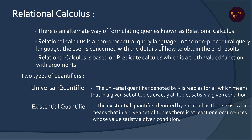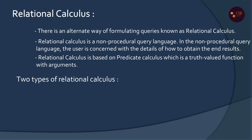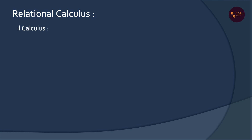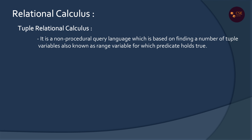There are two types of relational calculus: Tuple Relational Calculus and Domain Relational Calculus. In Tuple Relational Calculus, there are tuples available, and we find which tuples satisfy all the conditions.